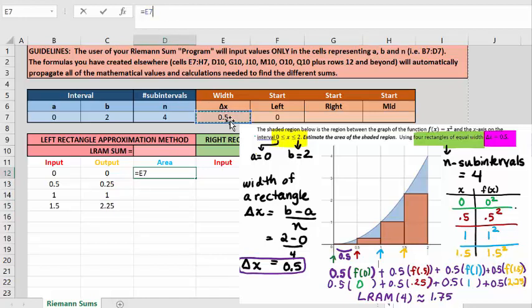Now we're going to calculate our area. So we need to take our delta x value, how wide each rectangle is, and we want this to always refer to cell E7, so we need to do dollar sign E, dollar sign 7, times the height of each of the rectangles. Now I will go about grabbing the lower left-hand corner and dragging that formula down so that it will calculate the area of each of our individual rectangles.